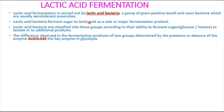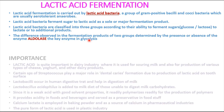Lactic acid bacteria convert sugars into lactic acid, which is the major product of lactic acid fermentation. The key difference observed among different groups of bacteria is mainly the presence or absence of a key enzyme called aldolase, which is a very important enzyme in the glycolytic pathway.